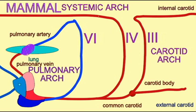The sixth arch forms the pulmonary arch, which is a completely separate pulmonary circuit. With the loss of the ductus arteriosus after embryonic development, there is no connection to the dorsal aorta. Blood leaves the right ventricle through the pulmonary artery to the lungs, which then returns oxygenated blood through a pulmonary vein.